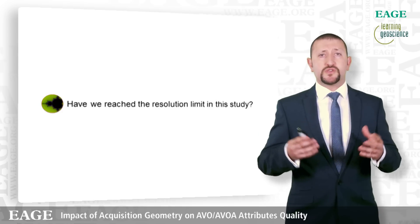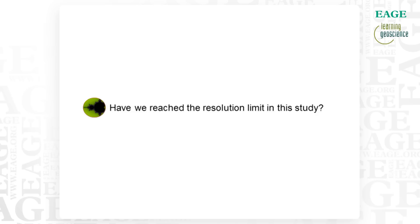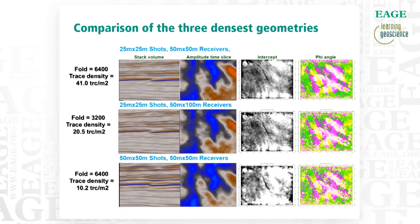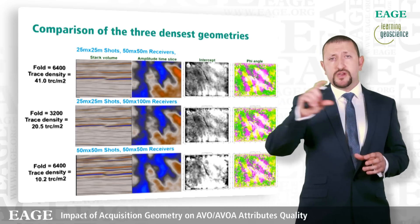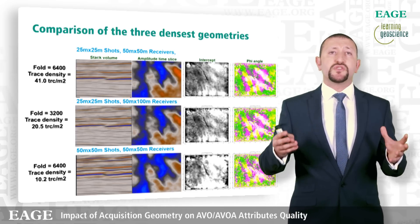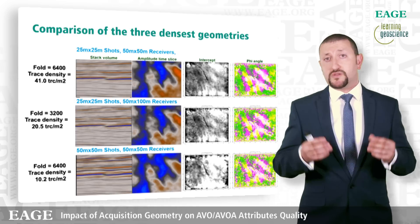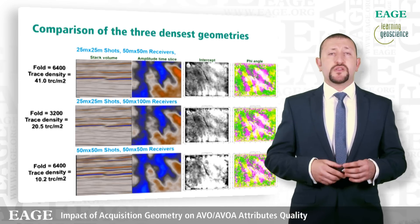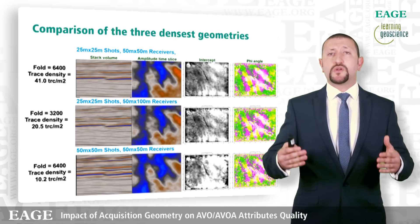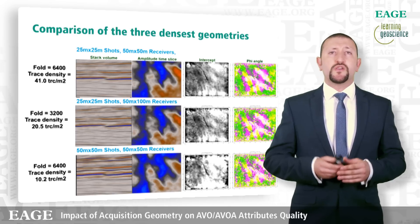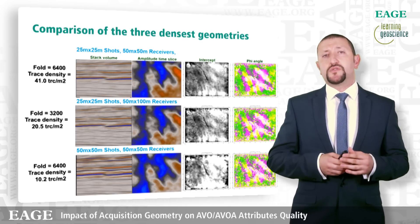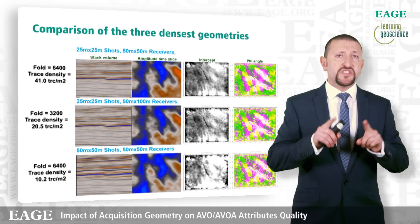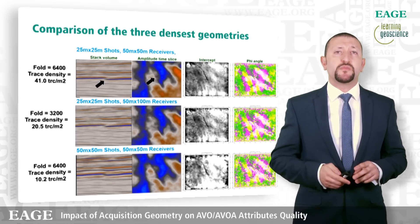Let's dive into the results. First: have we reached the resolution limit in this study? To answer this, we're comparing the densest survey — the undecimated one — to the closest survey to it in terms of fold, and also the closest in terms of trace density. The top row on the screen shows attributes extracted from the original undecimated survey. The one in the middle comes from the closest survey in terms of trace density, and the bottom from the closest in terms of fold. From left to right, we're looking at a seismic section zooming into the seismic volume around a small fold called the reshuffle, which you can probably see right in the middle of the square.